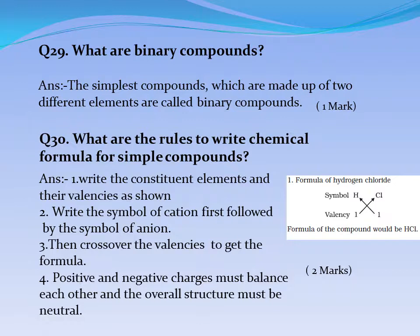Question No. 30: What are the rules to write the chemical formula for simple compounds? Answer: 1. Write the constituent elements and their valencies. 2. Write the symbol of the cation first followed by the symbol of the anion. 3. Then cross over the valencies to get the formula. 4. Positive and negative charges must balance each other and the overall structure must be neutral.